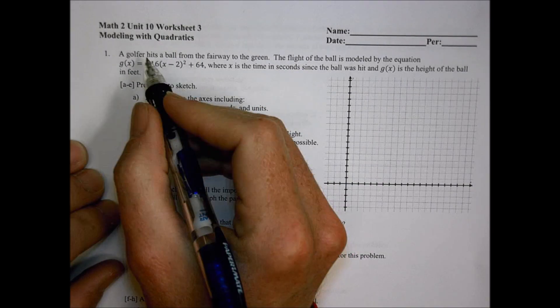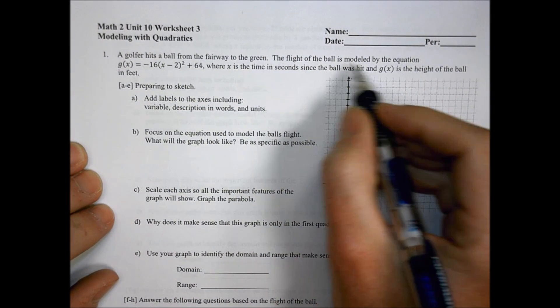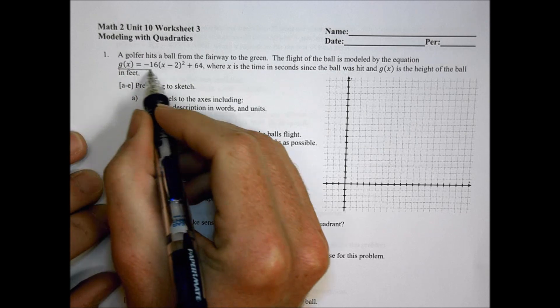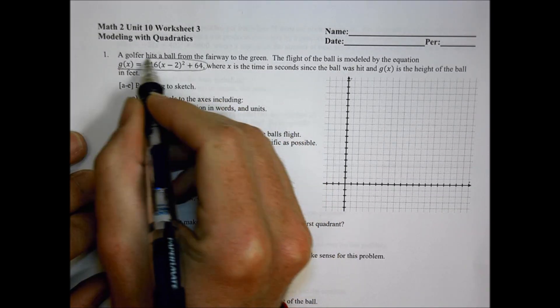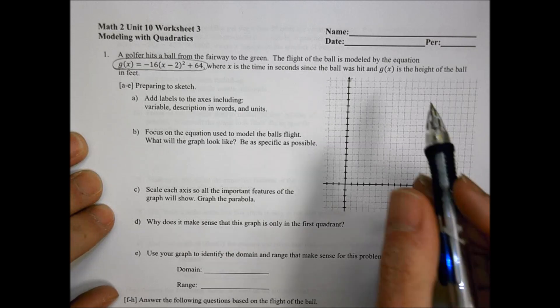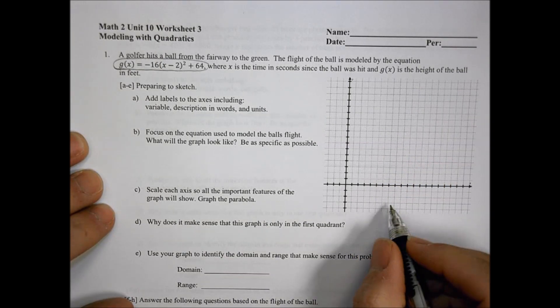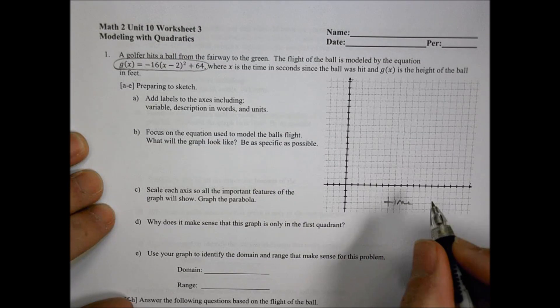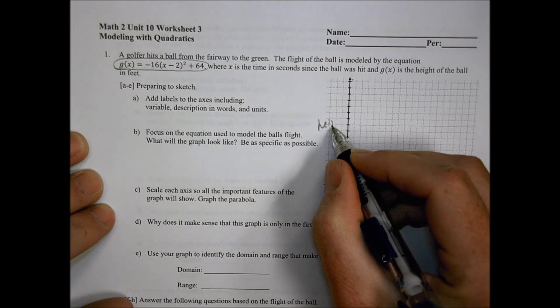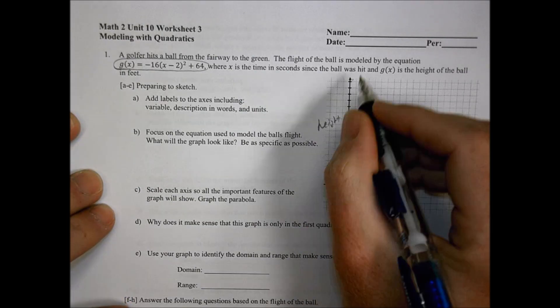In the first story, we have a golfer who hits a ball from the fairway to the green and the flight of the ball is modeled by this equation, g(x) equals all of that stuff, where x is the time in seconds since the ball was hit and g(x) is the height of the ball.